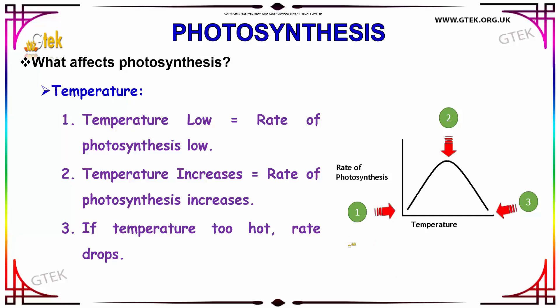The third factor is temperature. If the temperature is low, then the rate of photosynthesis is low; if it is high, then the rate of photosynthesis is also high. But if the temperature is too hot, the rate of photosynthesis drops. This graph shows that when the temperature is high, the rate is high, and when it is low, the rate is low.